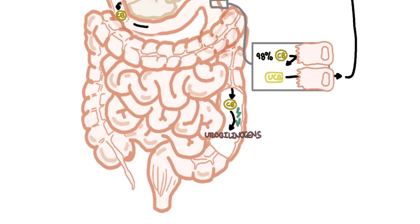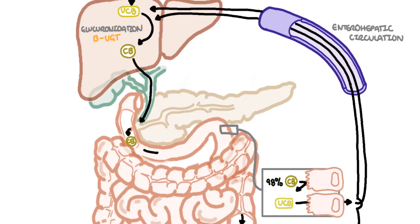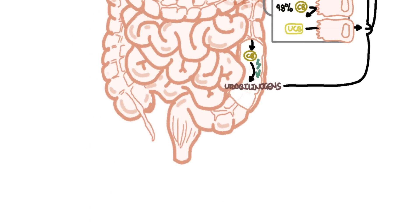Urobilinogens are partly absorbed in the bowel and undergo enterohepatic circulation where the urobilinogen enters the liver to get processed again. The fraction that is not cleared by the liver enters the general circulation and is partly excreted in urine. Urobilinogen gives urine its yellow color. Majority of urobilinogens is excreted in feces. The urobilinogens here are further oxidized to form urobilins including stercobilin, which gives feces its brown color.